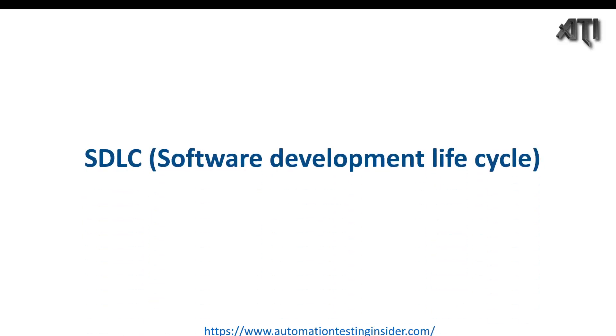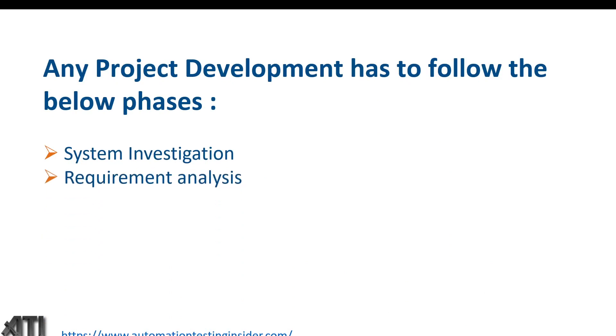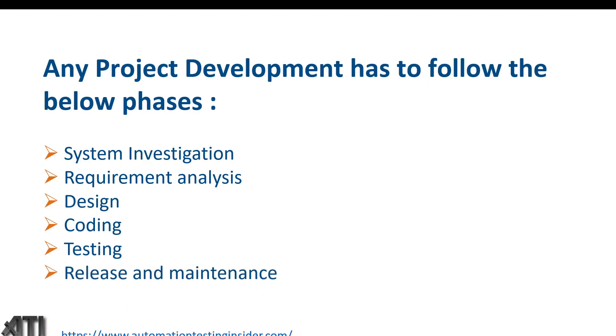Now let's talk about the different stages in detail in my PPT. Any project development has to follow these phases: system investigation, requirement analysis, design, coding, testing, and release and maintenance. These are the different phases involved to develop any project in the Software Development Lifecycle.